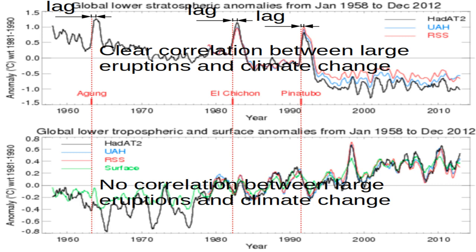And that is the lagging time — always important to understand, whatever you study. So if we look at this upper graph, we have three eruptions: Agung, El Chichon, and Pinatubo — three pretty large volcano eruptions over the last 50 years.